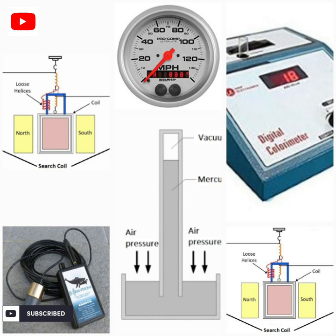The wavemeter is used to measure the wavelength of a radio wave. The wattmeter is used to measure the power of an electric circuit. The voltmeter measures electric potential difference between two points. The viscometer measures the viscosity of liquids. The vernier is used to measure small divisions of a scale.